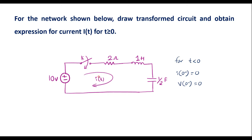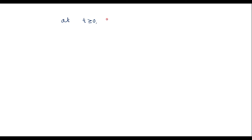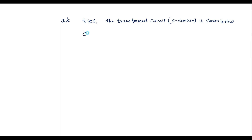Now let me draw the s-domain equivalent circuit, or transformed circuit, for t greater than or equal to 0. In the transformed circuit, capacitor C should be replaced by 1/(Cs), inductor L should be replaced by Ls, and R should be kept as it is.